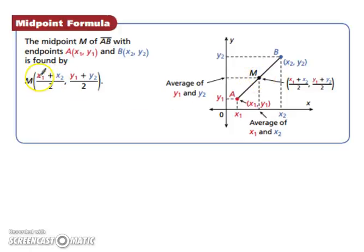So the average of your x's: add your two x's together and divide by 2. The average of your y's: add your two y's together and divide by 2. Let's try a couple of examples.